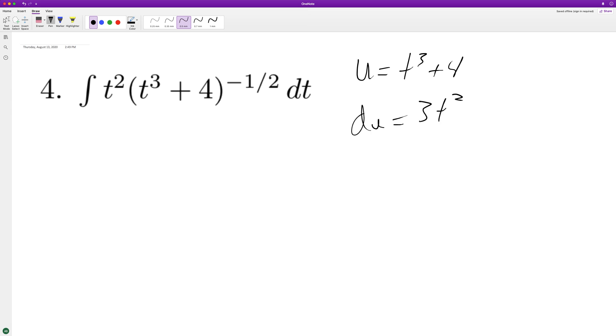If you notice, there's just a t squared here and the dt, so you get du equal to dt. We need to multiply by one third because we have three t squared here, so one third du equals dt.